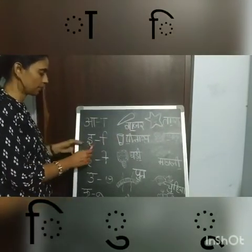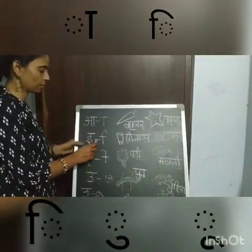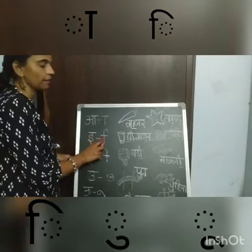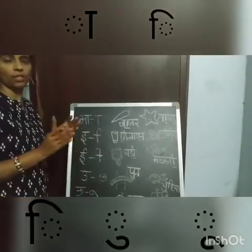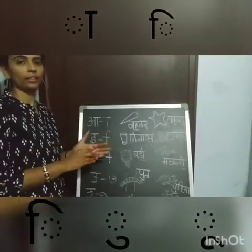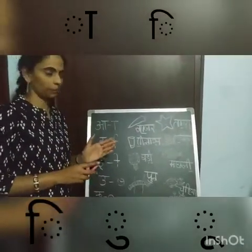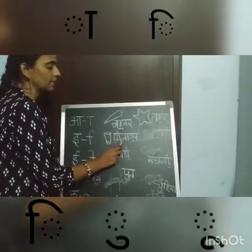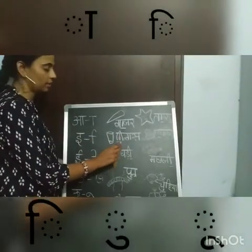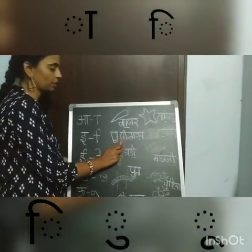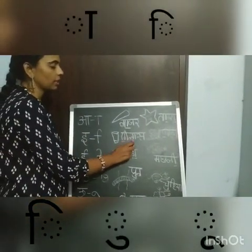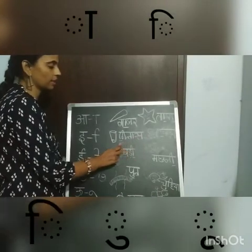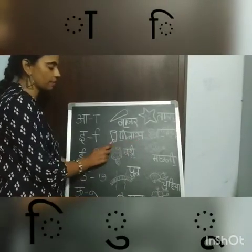Next, the next Matra — Choti Matra. Choti Matra, always we will write on the left side of the letter. And there is a Gilaas. Gaki Choti Matra, Laki Matra — Gilaas, means glass.